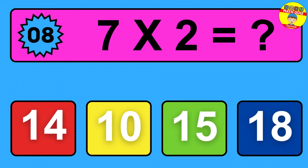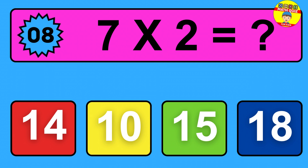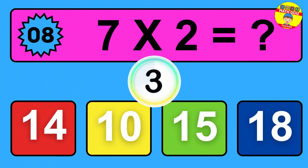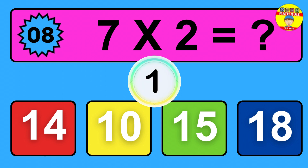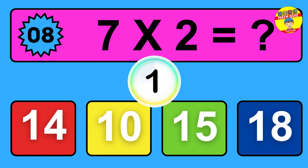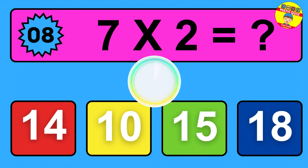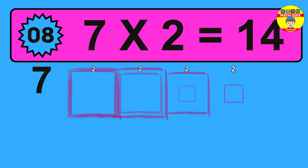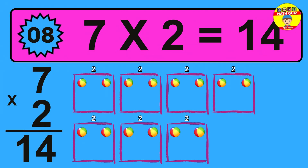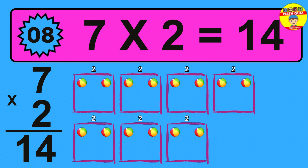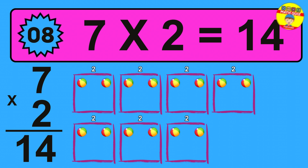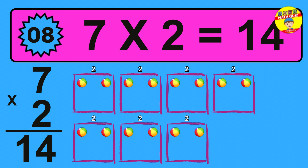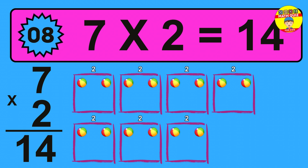Question 8: 7 times 2 equals what? The answer is 7 times 2 is 14. To calculate, we have 7 groups with 2 balls each one. So how many balls do we have? 14 balls.